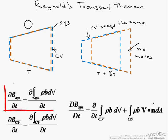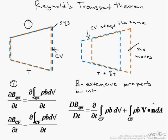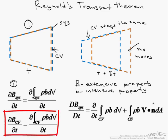So we start with the fact over here that the change of some extensive property, so B is an extensive property of the system with respect to time equals rho times some intensive property that is associated with the extensive property times the change in volume. And we do the same thing right here however it is our change with respect to time in our control volume.